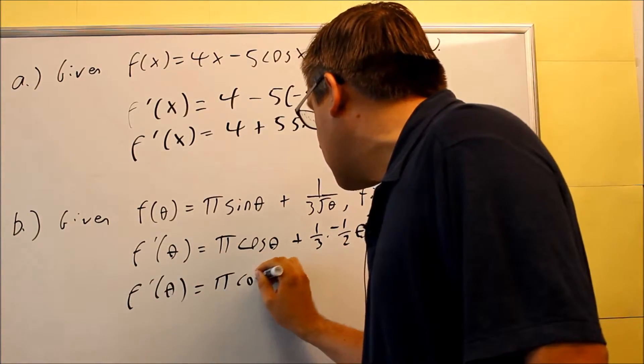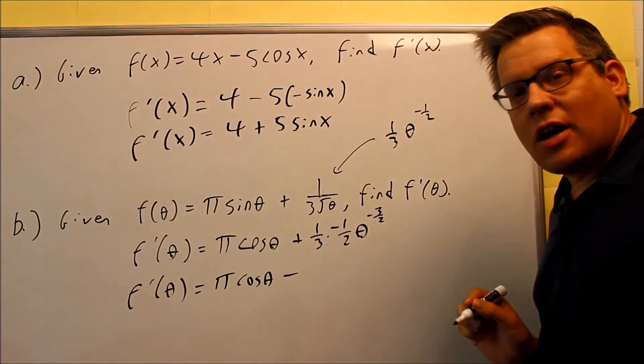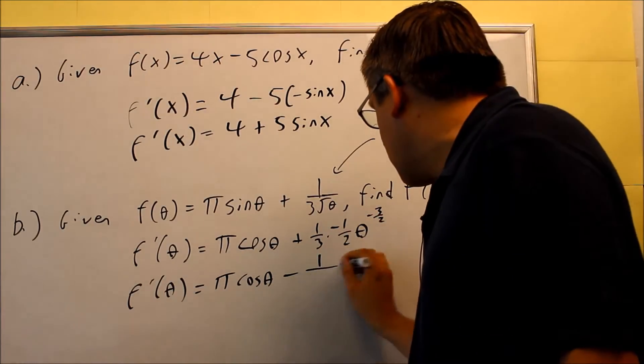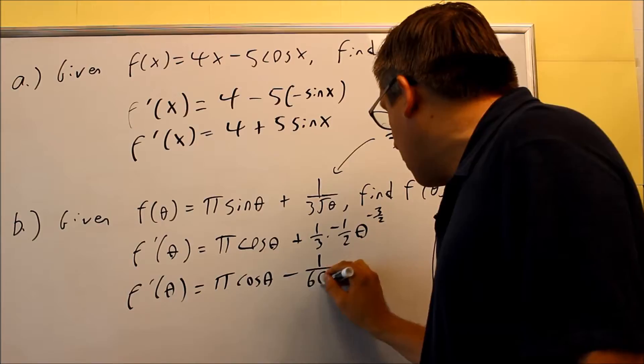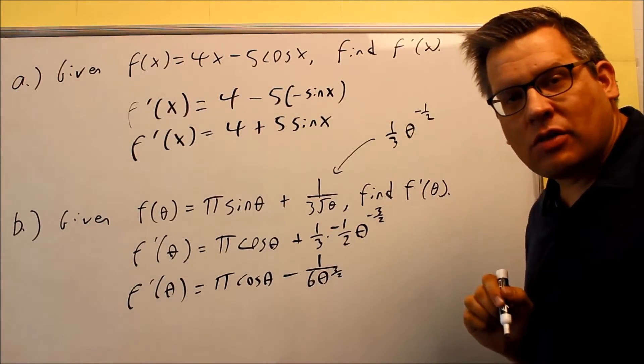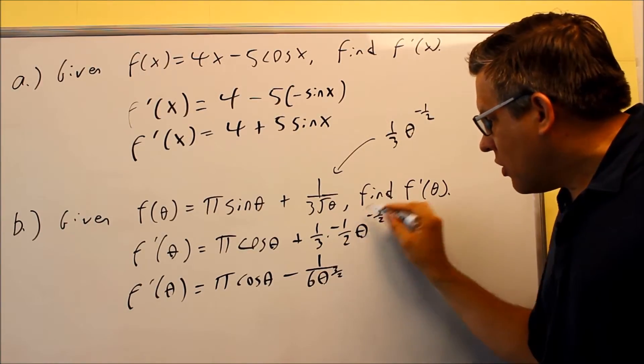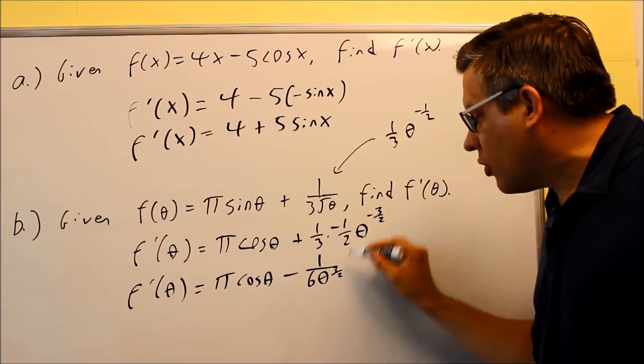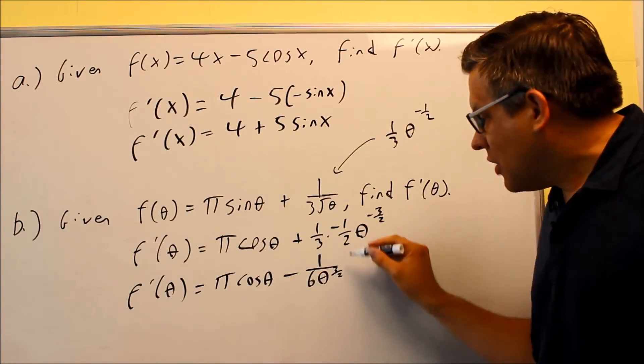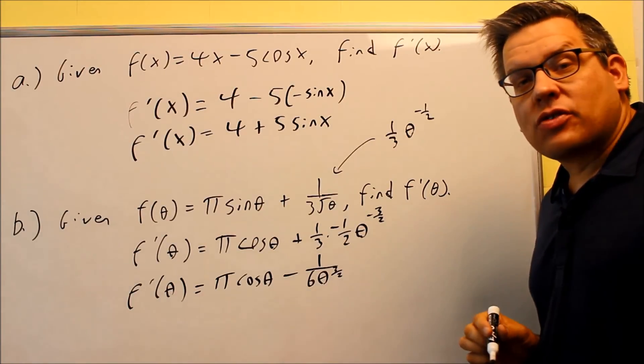So I have π cos(θ) and then this part is going to give us a minus because there's a minus sign there. I get 1/6 and then the θ down below I can write that as a positive 3/2 power or if you want to change it back into a radical you can do that as well but it's sufficient just to leave it like this. Again, the negative goes down below there. Any time you bring it across to the division bar the power turns positive so this would be your final answer.